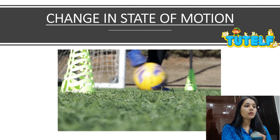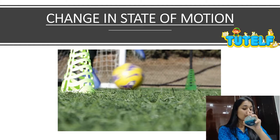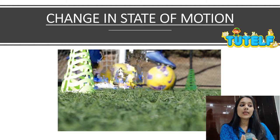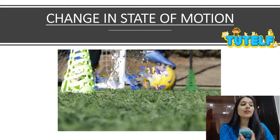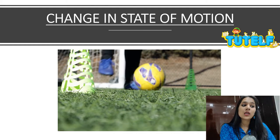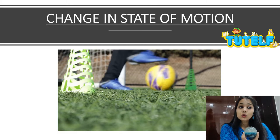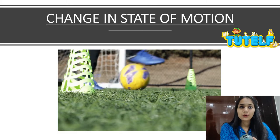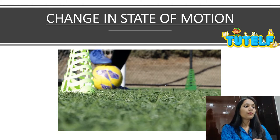For example, you can see that this person is playing with a football. The ball's direction is continuously changing, the speed may be changing, and the object goes from rest to motion when he starts to move it. So these are all examples of change in the state of motion.